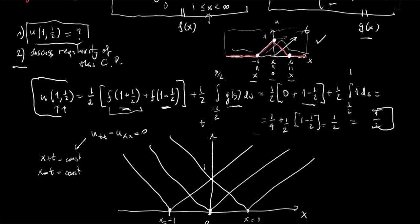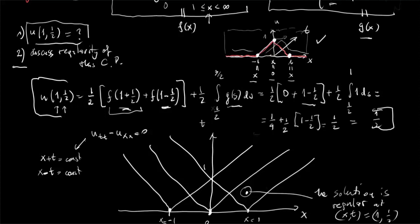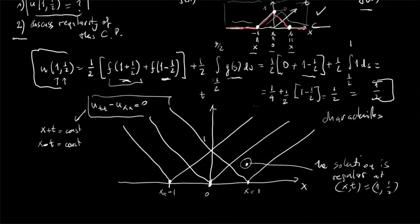If the solution is irregular at some points in the x-t plane, it will be irregular only at values of x and t lying on these characteristic lines. Our point (1, 1/2) lies off all these lines, so the solution is very regular there. The solution is regular everywhere except along these characteristics. Since the initial data is not differentiable at x equals minus 1, x equals 0, and x equals 1, the solution given by the d'Alembert formula is a generalized solution, which may have singularities at points on the characteristics emanating from those three points.